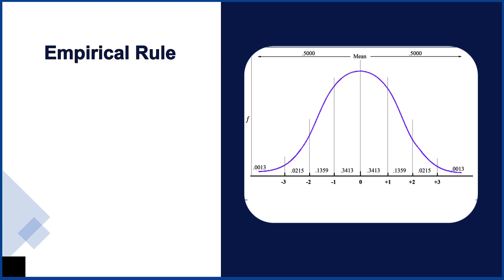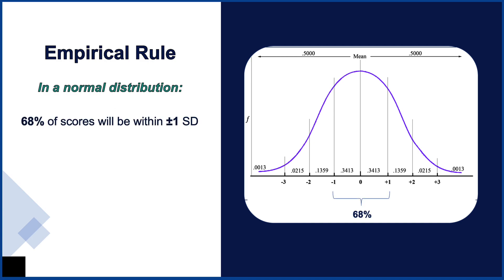Returning now to the empirical rule, we already know that in a normal distribution, half of the scores are above the mean and half are below. The empirical rule further teaches us that there is a standard number of scores between any two standard deviations. For instance, 68% of the scores in a standard normal distribution will be between positive one and negative one standard deviations. Between positive two and negative two standard deviations, we will find 95% of the scores.